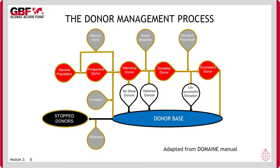It may be helpful at this stage to consider the donation process, as without this understanding it is difficult to think clearly about how donors differ from each other, but also over time as their career as a blood donor develops. The process is also the context in which donors exhibit behaviors, so the two must be thought of together. This graphic is adapted from a manual produced by the DOMAINE Project — Donor Management in Europe. In red can be seen the steps taken by the donor towards a successful donation, and in grey are the management processes the blood service brings to bear.